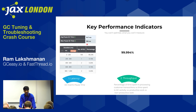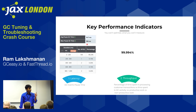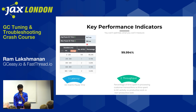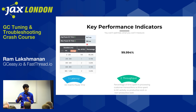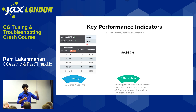The second KPI is throughput — the amount of time your application spends processing customer transactions versus the time it spends doing garbage collection. In this case, 99.994% throughput means the application spent 99.994% of time processing customer transactions and only 0.006% doing garbage collection. Garbage collection is a necessary evil — you have to run it to reclaim memory, but it doesn't directly benefit your customer.